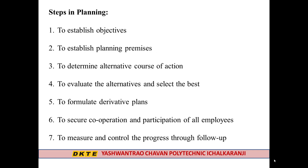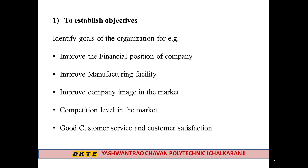The second point of this lecture is the different steps we have to follow during planning. There are mainly seven steps. The first step is to establish the objectives — we have to first decide what is the main objective of the planning. For example, improving the financial position, improving manufacturing facilities, improving company image, or ensuring good customer service and satisfaction.